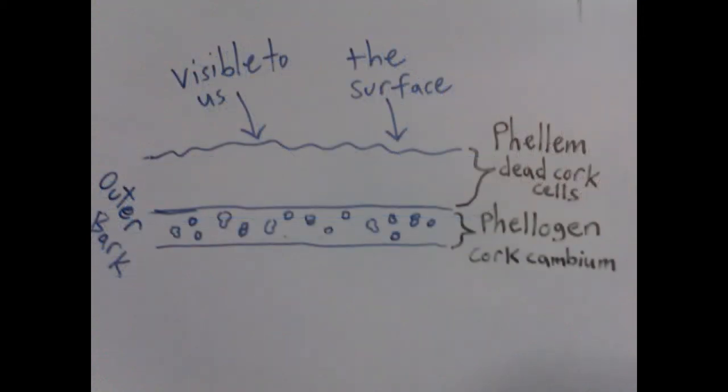The middle layer of the outer bark is called the cork cambium, or phelogen. This tissue consists of undifferentiated cells that can divide and be used for various growth and maintenance or protection needs.